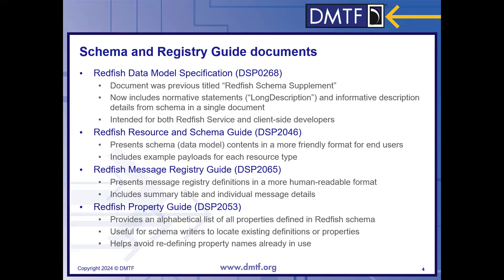If you're just trying to use the service from one of your vendors, the Redfish resource and schema guide is a smaller version of that document that shows what we call the informational text, but really targeted more for end users. Separately, there is another document called the Redfish Message Registry Guide, which shows all of the standard error and event messages defined for Redfish interfaces. And lastly, there's a property guide if you're trying to look up property names alphabetically — that will take you to where you can find those particulars within the Redfish schemas.